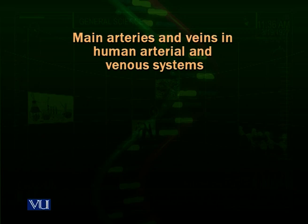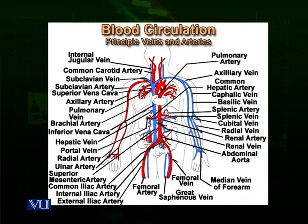Now we are going to talk about the main arteries and veins inside the human arterial and venous system. There are many arteries, veins, and capillaries — we will talk about only the major ones. The diagram shows the major circulatory vessels inside a human body. Dividing the vessels into two major parts makes it easier to understand. In red are all the arteries, because arteries have oxygenated blood, and in blue are the veins, because veins have deoxygenated blood.